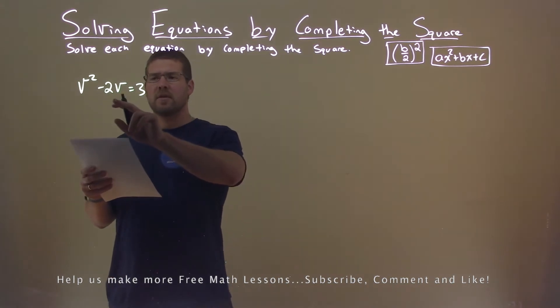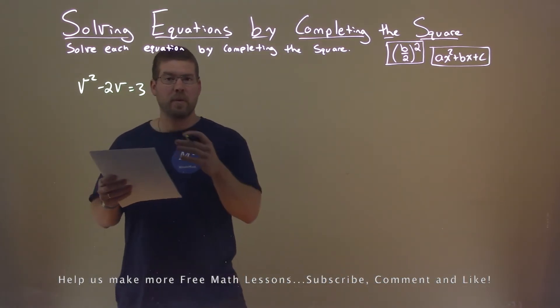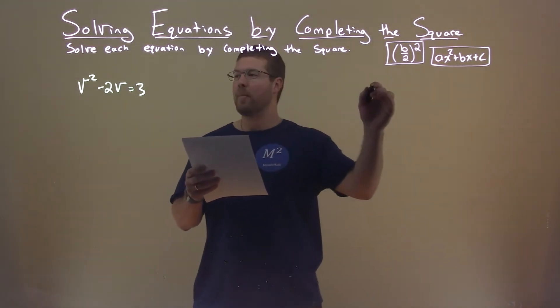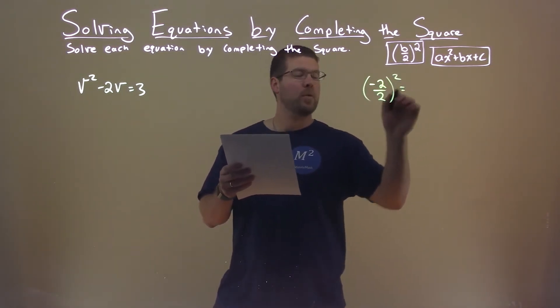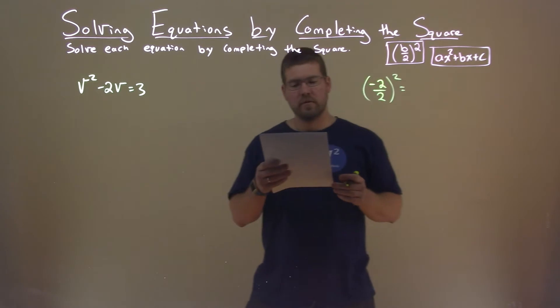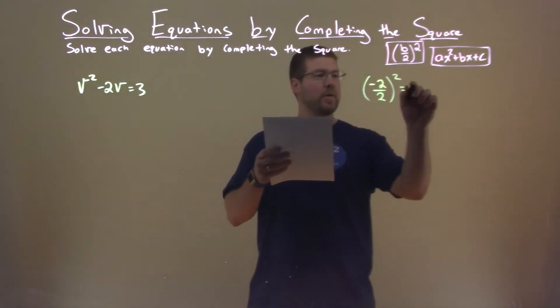Well, the first thing I'll notice here is it's already in the form I'm looking for. So I'm going to take my b value, which is negative 2, divide that by 2, and I'm going to square that. Negative 2 divided by 2 squared is a positive 1.